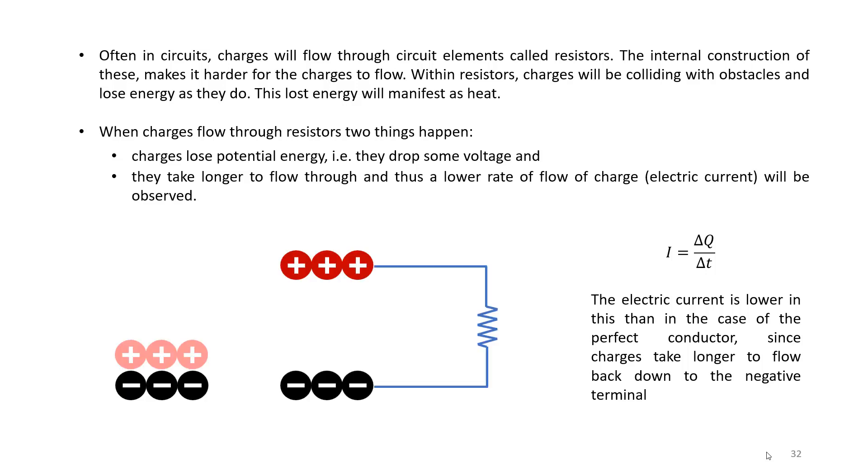So again here we're creating a voltage difference delta V and we're letting the charges flow through our resistor, and we will get a current this time which is still pretty high but not as high as it would be in a perfect conductor.